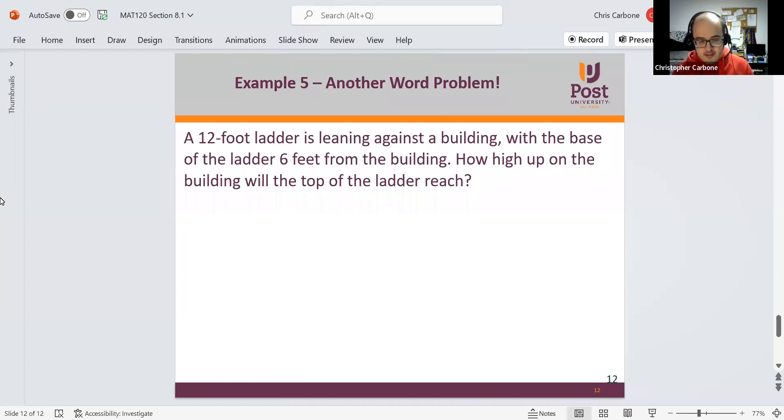And then, a 12-foot ladder is leaning against a building with the base of the ladder 6 feet from the building. How high up on the building will the top of the ladder reach? So we're going to have something like this. 12 here, 6 here. We want to find this side.